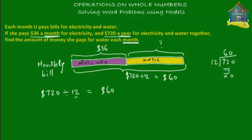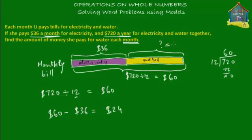So what do we have here? She pays $36 in electricity bills and $60 in electricity and water bills combined. So how much does she pay for water each month? Looking at the model diagram, she pays $60 minus $36 for water per month. $60 minus $36 equals $24 per month for the water bill.